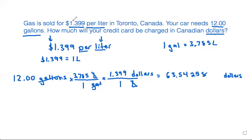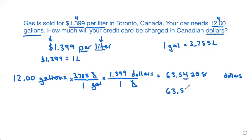Let's look at how we need to round our answer. 1.399 has 4 sig figs and 12.00 also has 4 sig figs, so we need to round our answer to 4 sig figs. That would be to the tenths place — the number to the right is a 2, which is less than 5, so we don't add 1. The answer is $63.54.